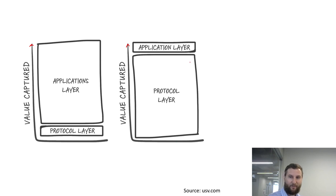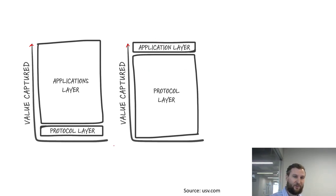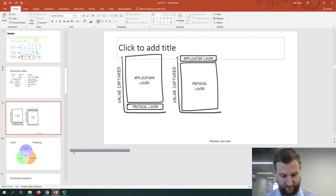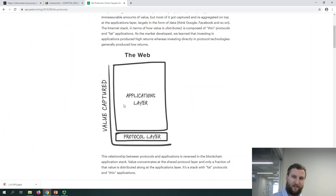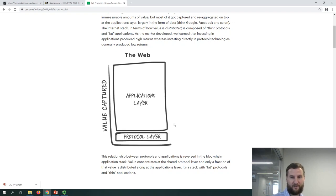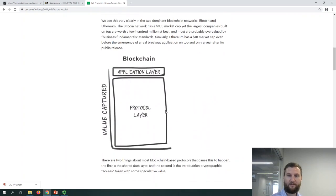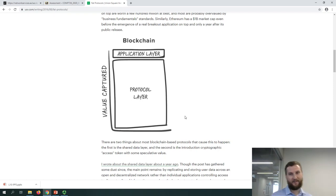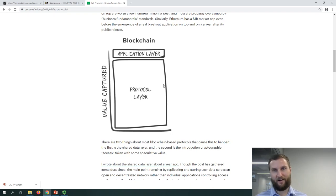You can have a tiny protocol layer with a huge application layer — lots of value captured in applications — or a huge protocol layer with a tiny application layer. USV, Union Square Ventures, views the web as having a tiny protocol layer. HTTP has been around a long time, and the real innovation in the last 20 years has been in applications. For blockchain it's reversed — they see value captured at the protocol level, with applications on top maybe not having a lot of value right now, though that might change.